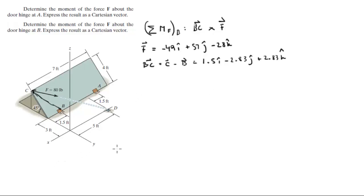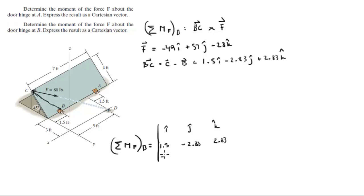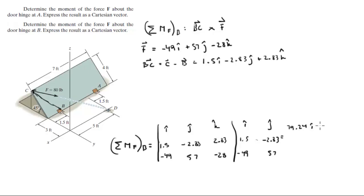The cross product of BC and F is set up with matrix i, j, k. BC is 1.5, negative 2.83, 2.83; F is negative 49, 57, negative 28. Redrawing the first and second columns: 1.5, negative 2.83, negative 49, 57. The positive diagonals come out to 79.24i minus 138.7j plus 85.5k, and the negative diagonals come out to negative 161.3i plus 42j minus 138.7k.